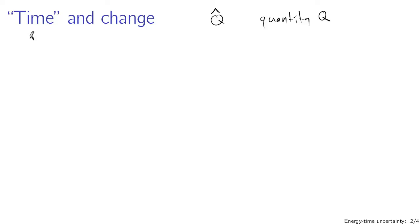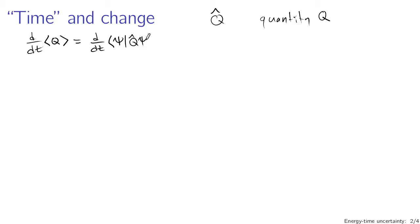Let's consider the time derivative of the expectation value of Q. This gives us a classical-like notion of how things change with time. The expectation value in our generalized formulation is the inner product of our state psi, our operator Q-hat acting on state psi. This inner product has three components: a wave function on the left, an operator which potentially has time dependence in it, and another state on the right — all potentially varying with time.